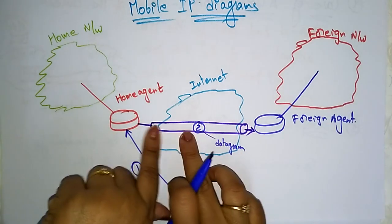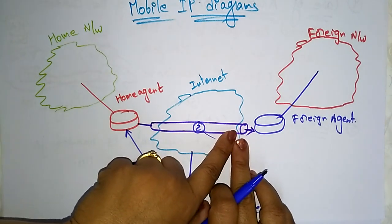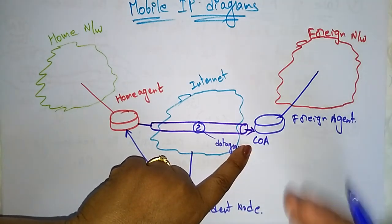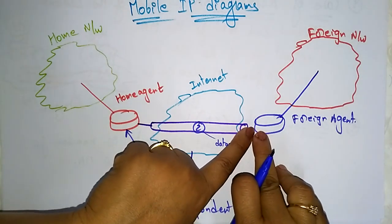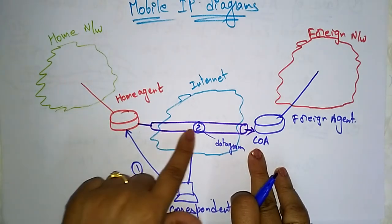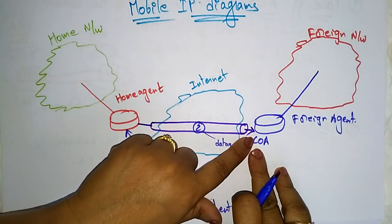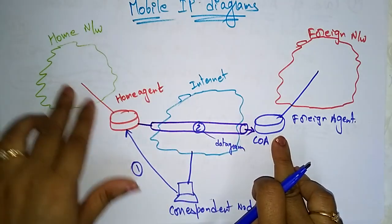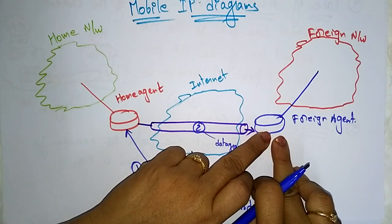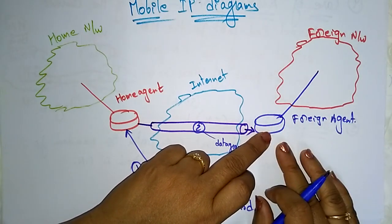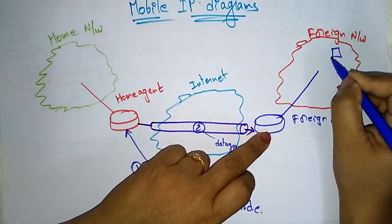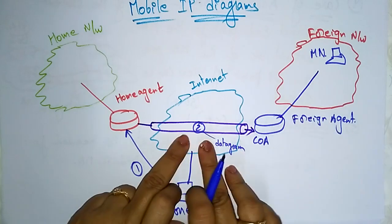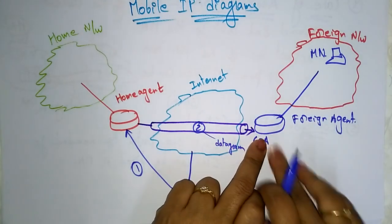The datagram is passed over the tunnel. The tunnel endpoint consists of the COA — the Care of Address — which indicates where you have to send the data. That Care of Address is registered in the foreign agent. With the help of this Care of Address, the home agent sends the datagram to the foreign agent. The foreign agent receives the information regarding your mobile node and passes it to the mobile node, which is at the receiver site.